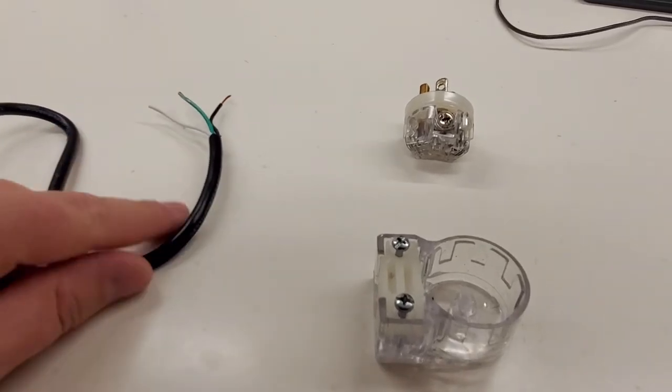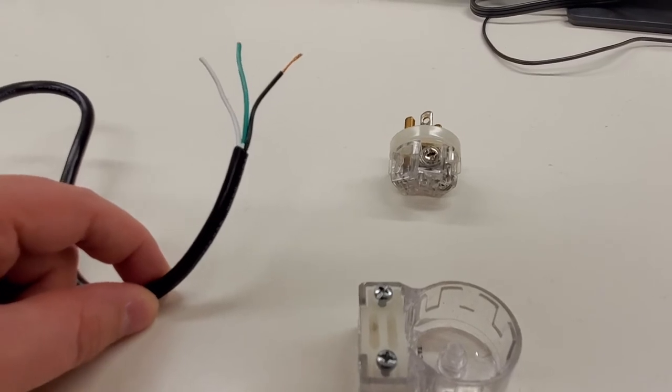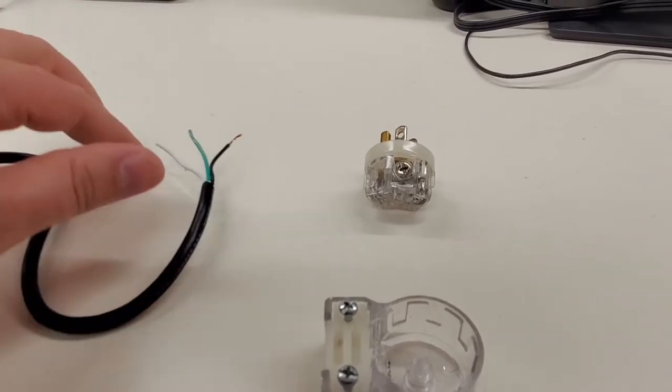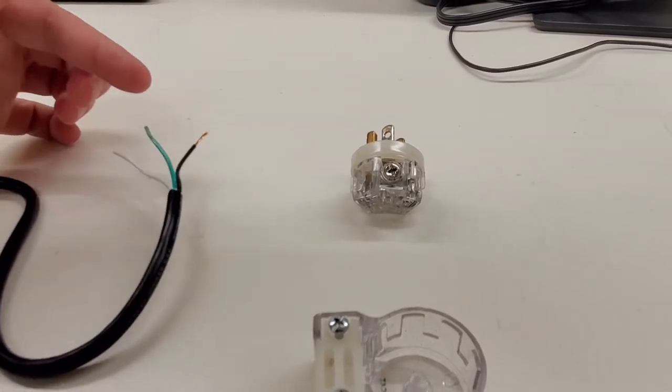Inside the typical 120-volt cord in America, you'll have black, white, and green: hot, neutral, and ground. Hot is the black, neutral is the white, ground is the green.